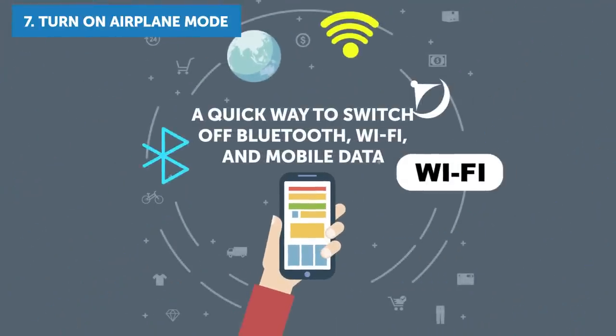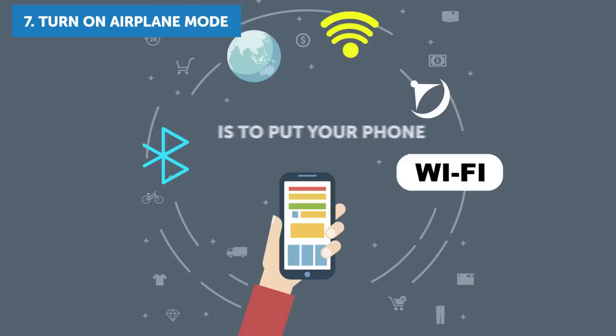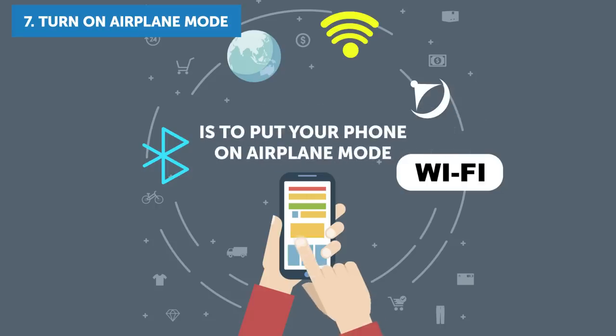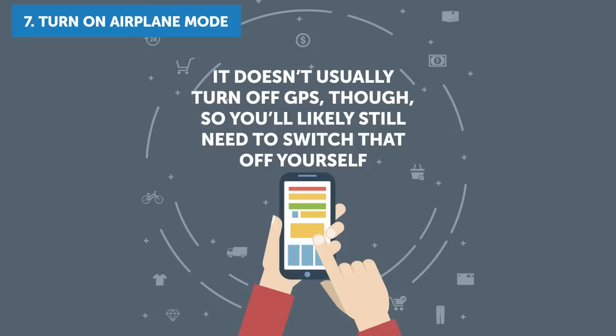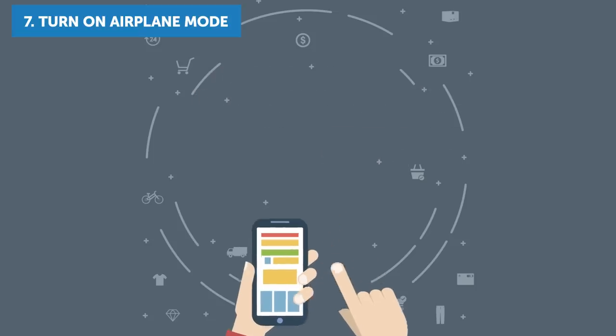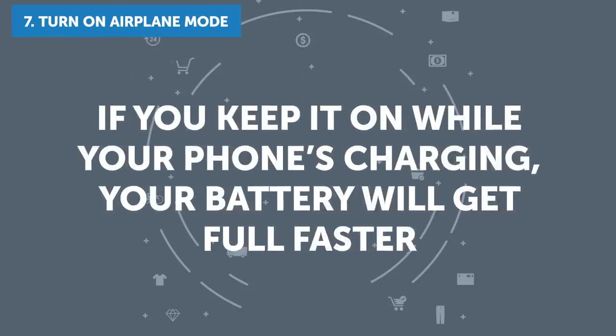7. Turn On Airplane Mode. A quick way to switch off Bluetooth, Wi-Fi and mobile data is to put your phone on Airplane Mode. It doesn't usually turn off GPS though, so you'll likely still need to switch that off yourself. What's also cool about Airplane Mode is that if you keep it on while your phone's charging, your battery will get full faster.